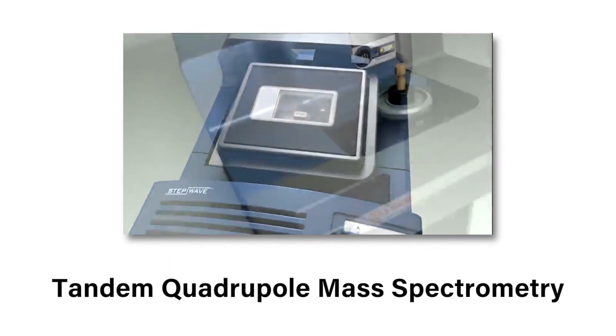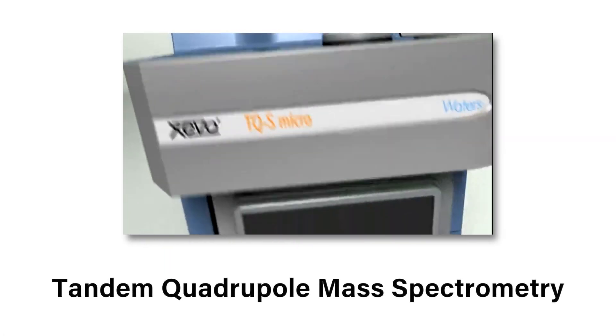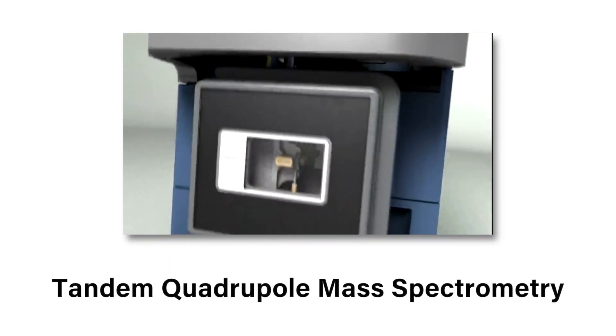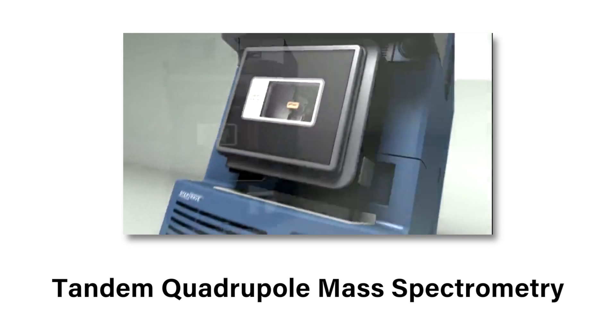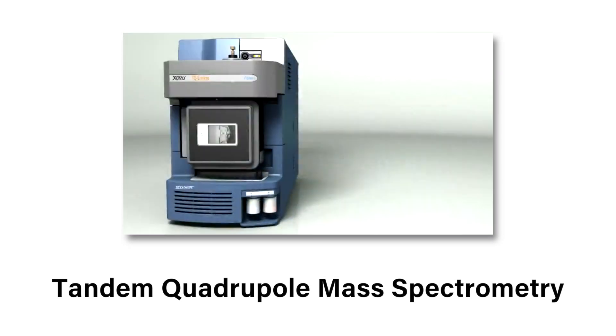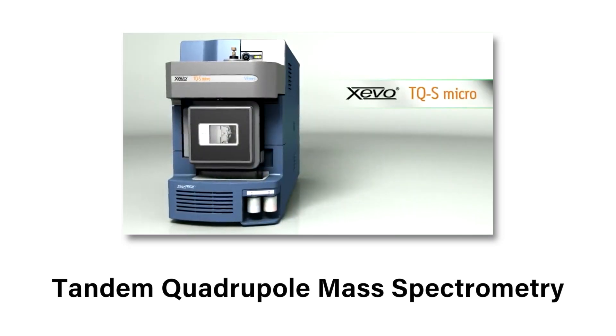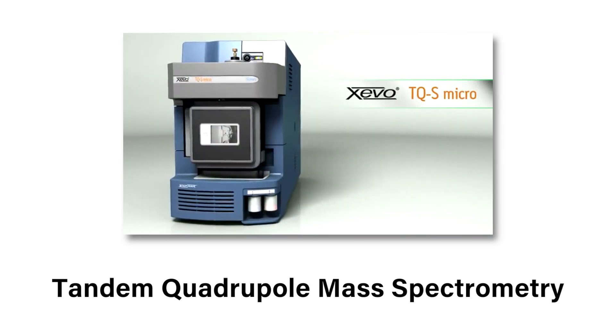For more than a decade, tandem quadrupole mass spectrometry has been the technique of choice for food and water testing laboratories performing routine analysis. This is primarily due to the superior sensitivity and selectivity that can be achieved even in complex matrices.